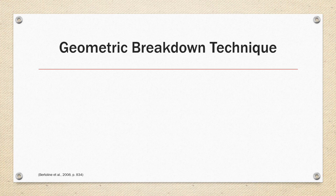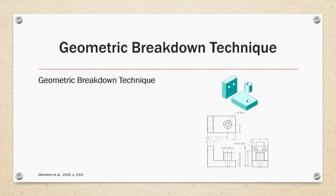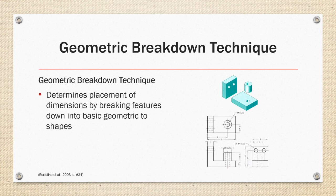The geometric breakdown technique involves determining the placement of dimensions by breaking features down into basic geometric shapes as shown in the example on the right. In the example the shape of the device is broken down into two rectangles with holes in them and a cylindrical boss.